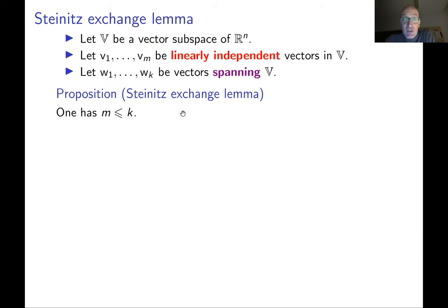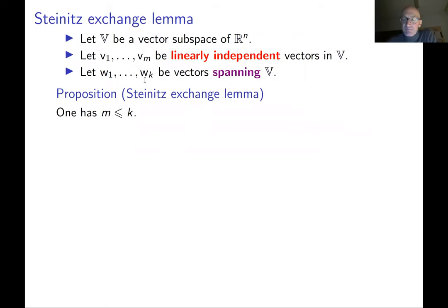Intuitively this is clear: if you add additional vectors to the spanning set, you still get a spanning set, so k can be as large as you like. But the number of linearly independent vectors, as we see from this lemma, is actually bounded — it cannot be too large. This is an important lemma; a very detailed proof is given in the lecture notes. The proof idea is induction on k. When k is 0, V is the zero subspace, and you cannot have any linearly independent vectors in V, giving the base case.